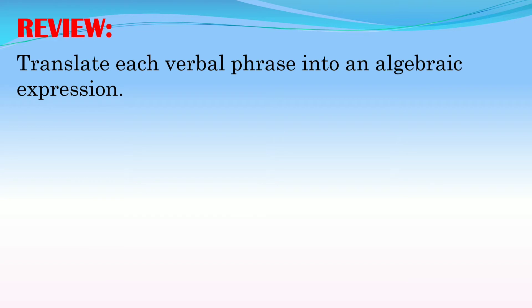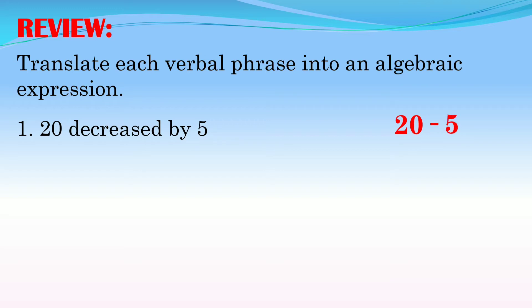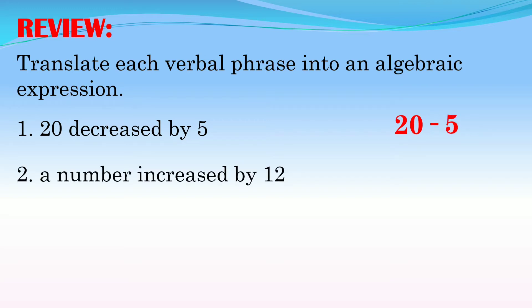So translate each verbal phrase into an algebraic expression. Number 1: '20 decreased by 5.' The keyword here is 'decrease,' so that means subtraction — we subtract 20 by 5, so we have 20 minus 5. Number 2: 'a number increased by 12.' The keyword is 'increase,' meaning addition. A number can be any variable, so we use x, giving us x plus 12.